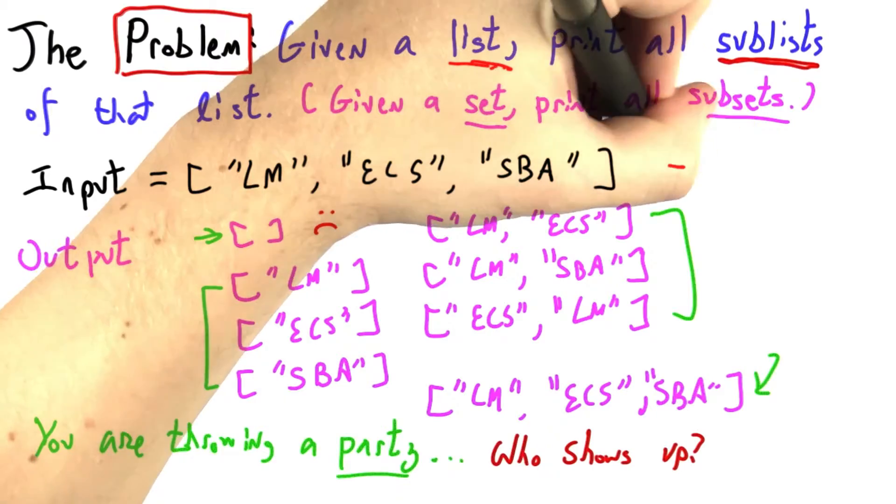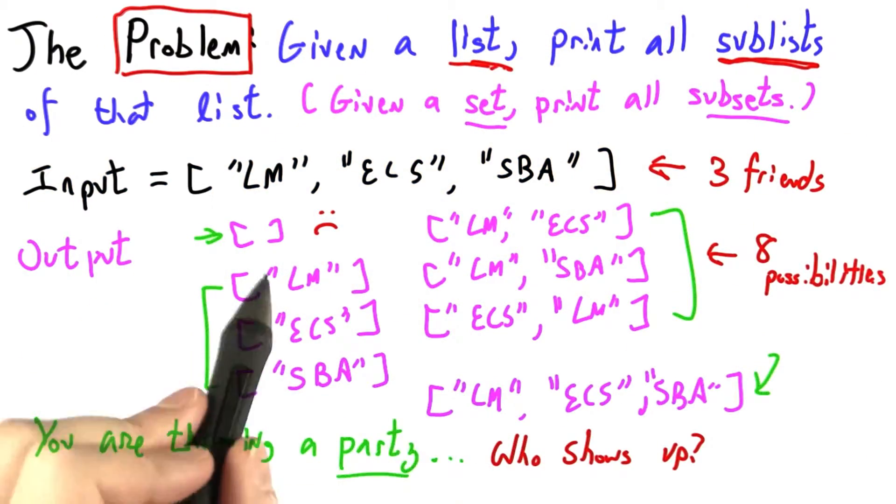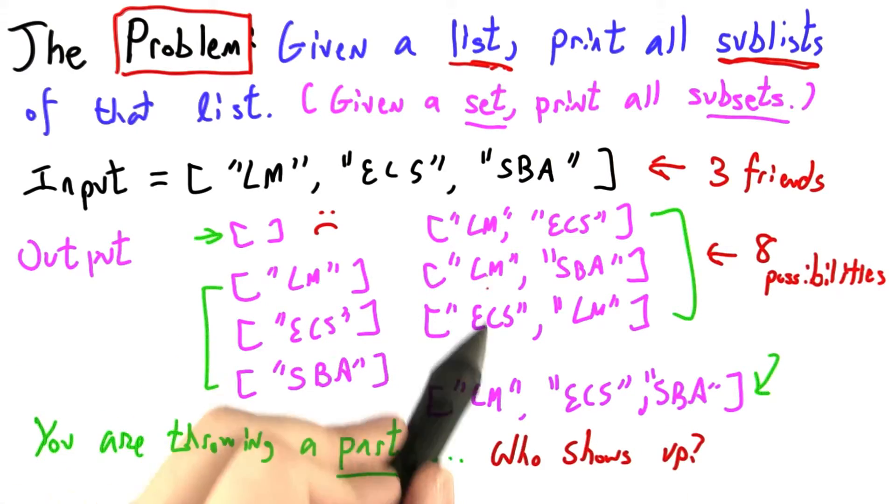In this particular example, we started with three friends and ended up with eight possibilities. One, two, three, four, five, six, seven, eight.